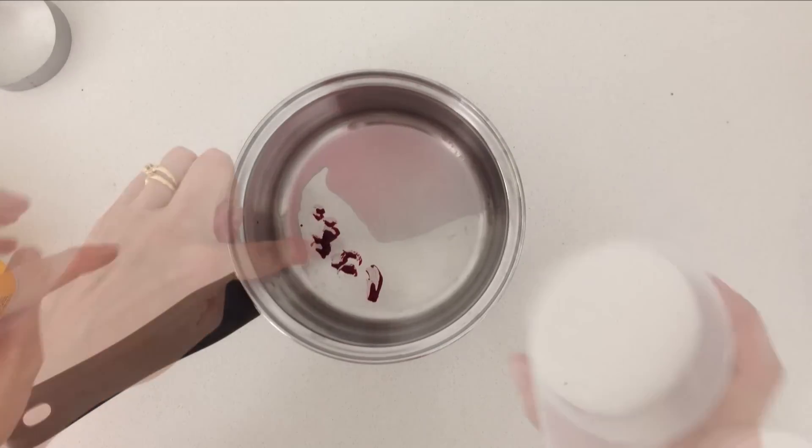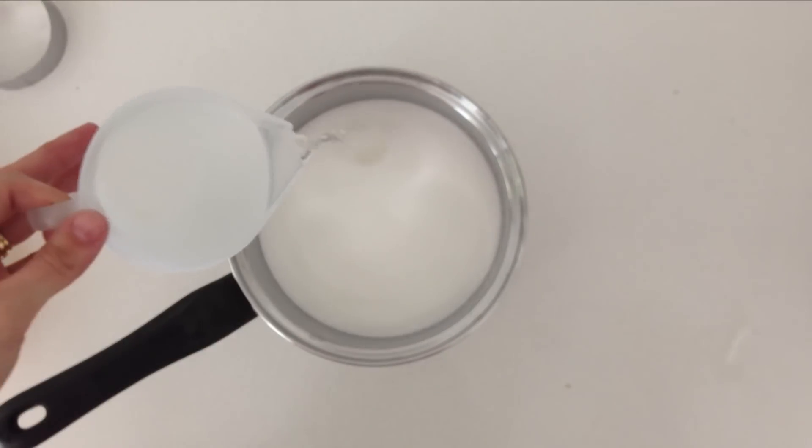Then place your food coloring, sugar, water, and if you like some flavoring, into a saucepan.